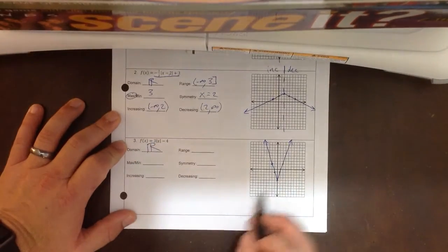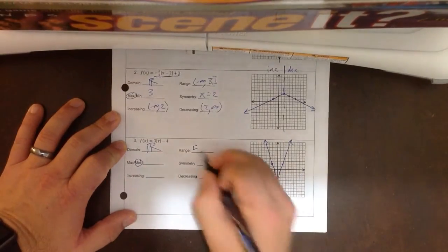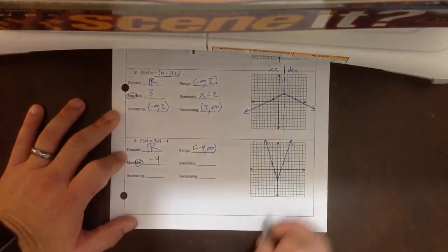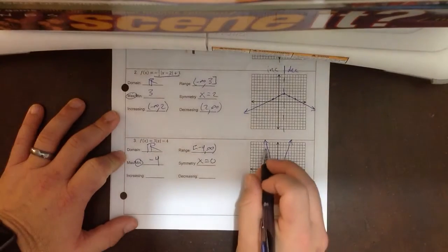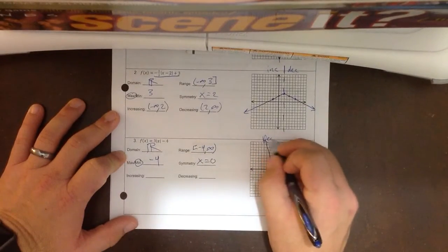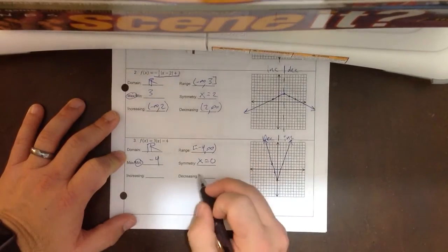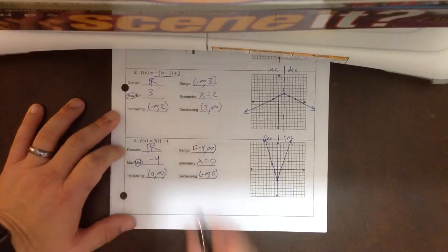Domain, all the numbers. My range has a lowest point, so a lowest point of negative 4 all the way up to infinity. So my lowest point of negative 4, symmetry is x equals 0, the y-axis. This one is decreasing, splits right here, and then increasing. So we're going to decrease from negative infinity to 0, and then pick back up 0 to infinity on increasing.